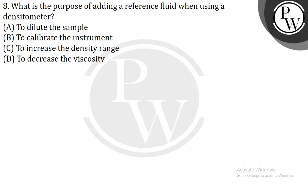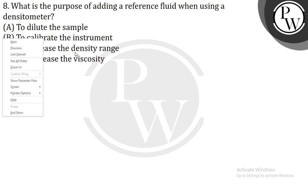Suppose of adding a reference fluid when using a densitometer. We take a reference fluid and find out the atmospheric pressure, and that is used for the calibration. So, the correct answer is option B: to calibrate the instrument. We take a reference fluid in case of a densitometer to calibrate the instrument.